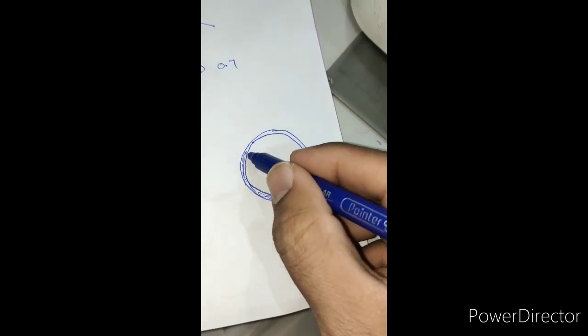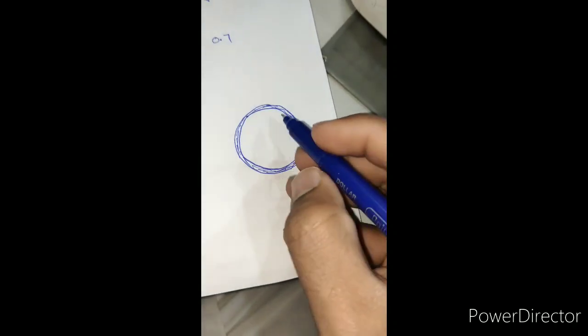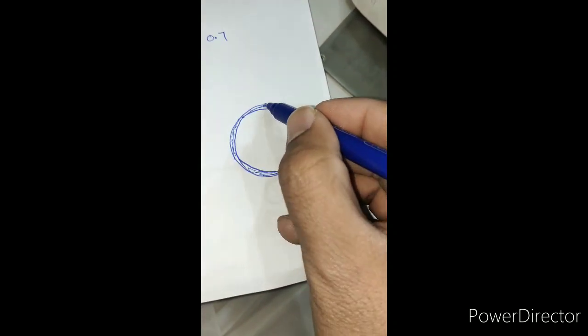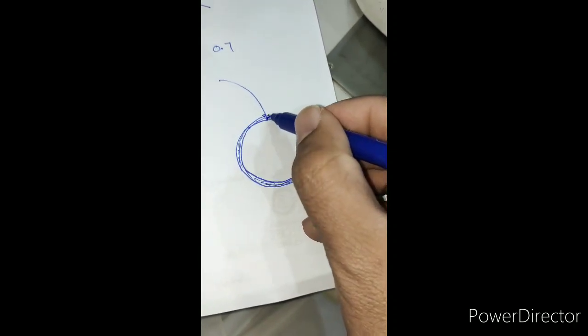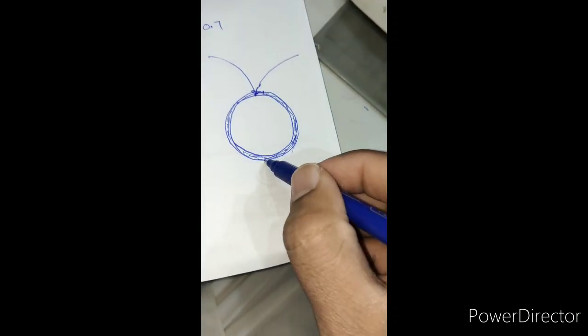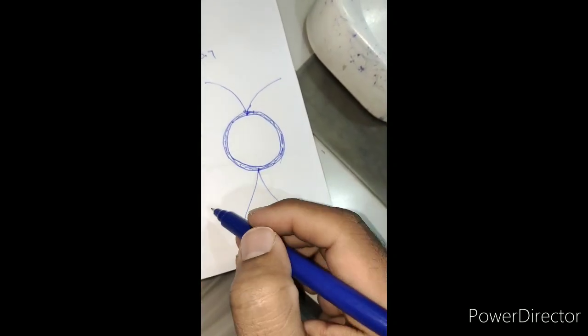So that's almost full cupped, advanced cupping, or 0.9 cup-disc ratio. So from where the vessels arise...